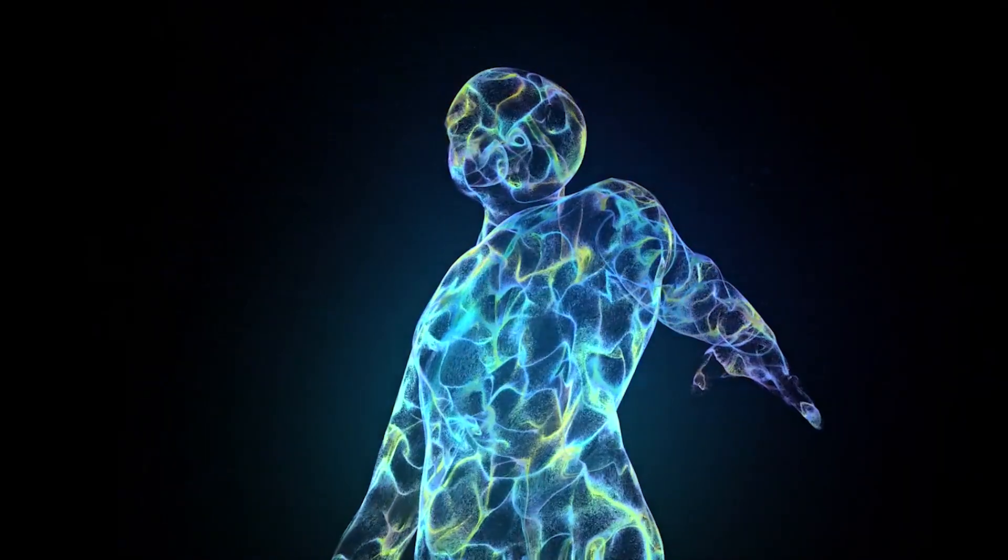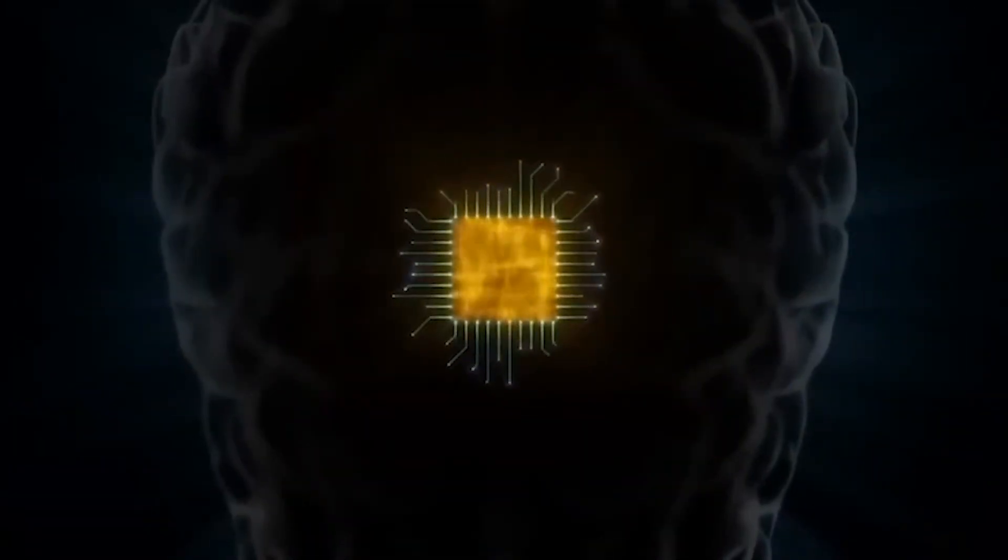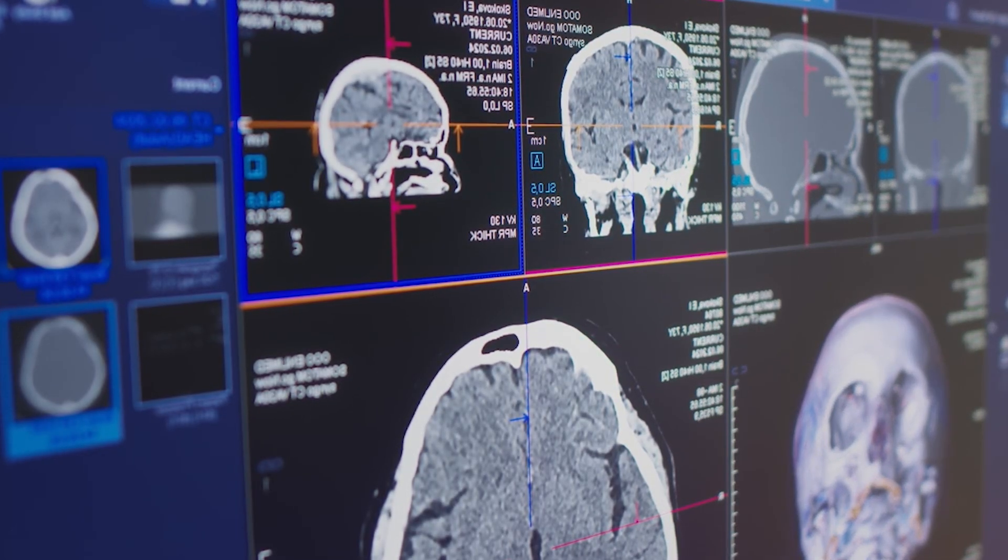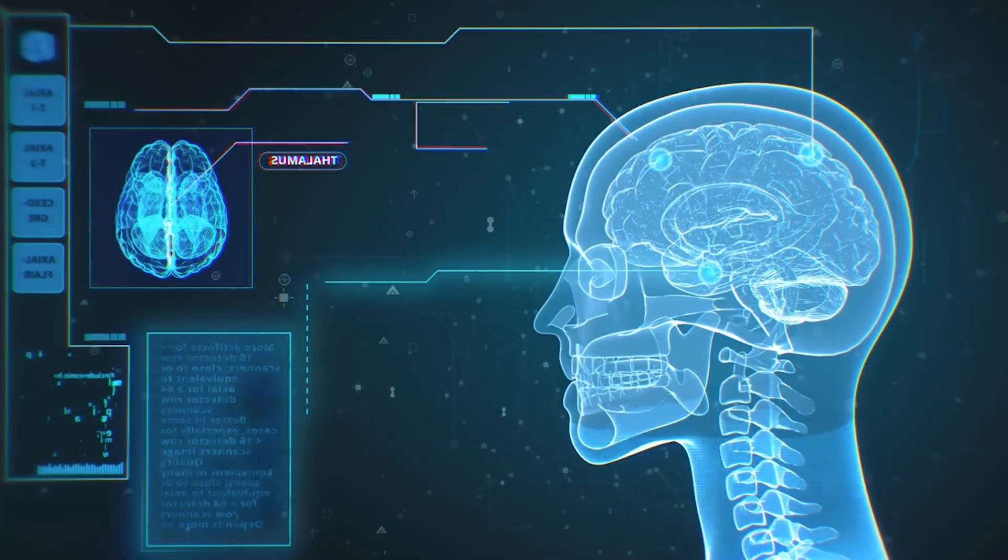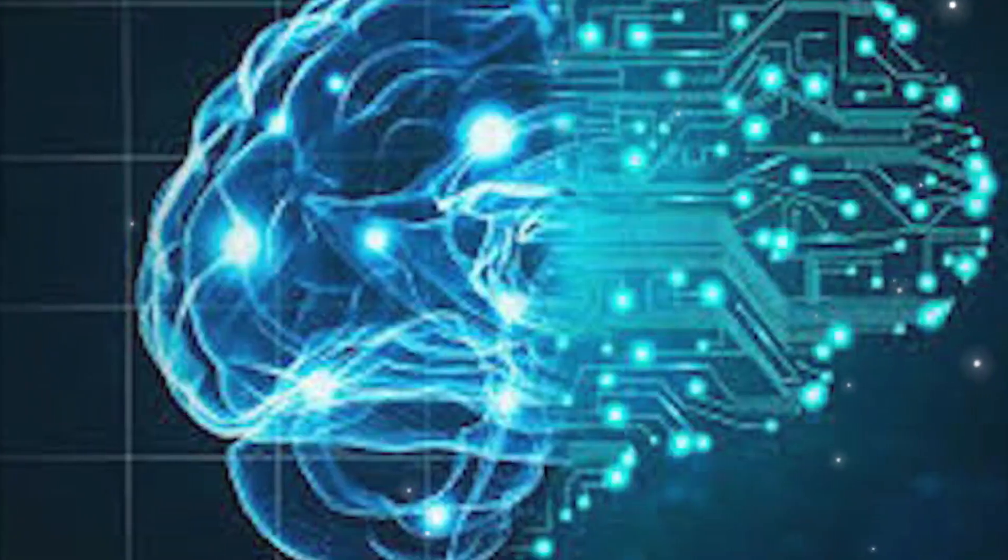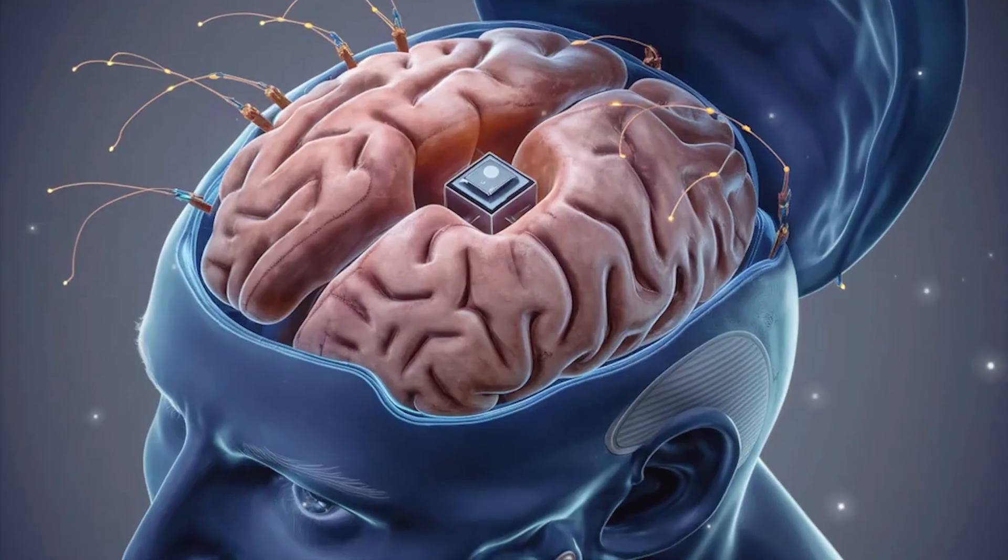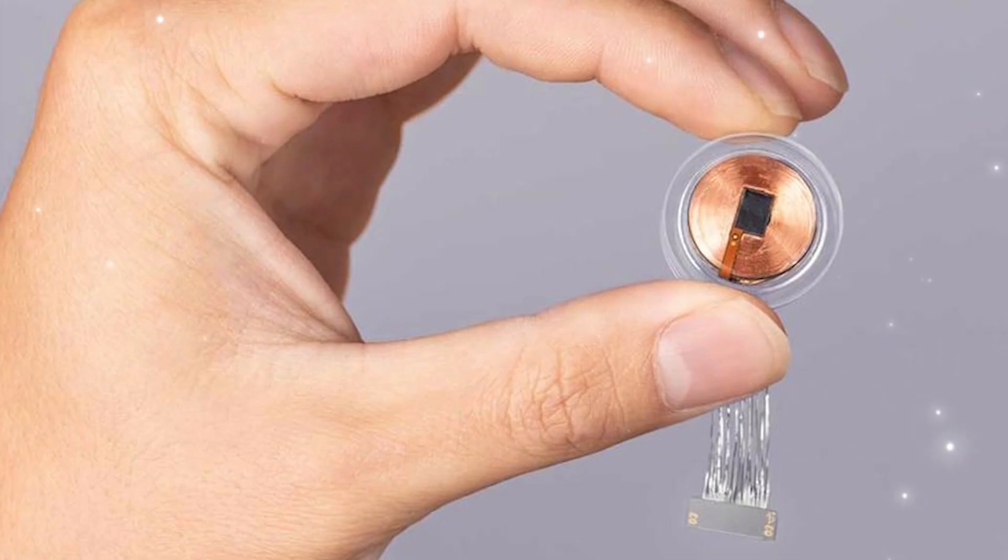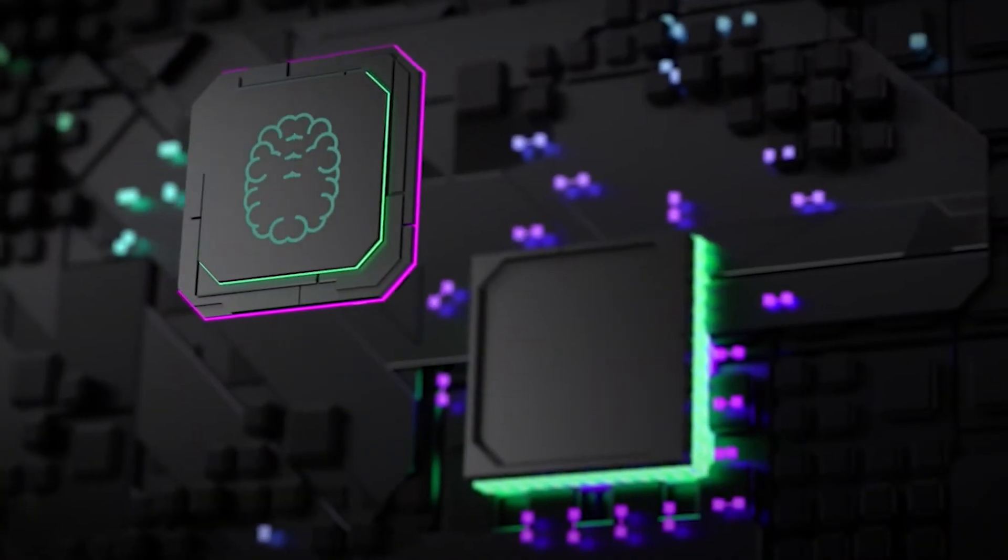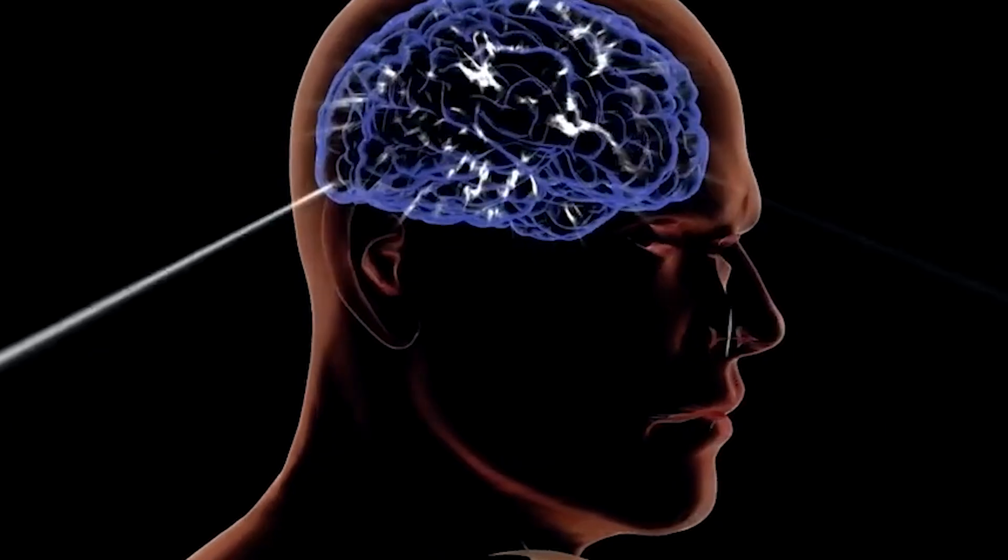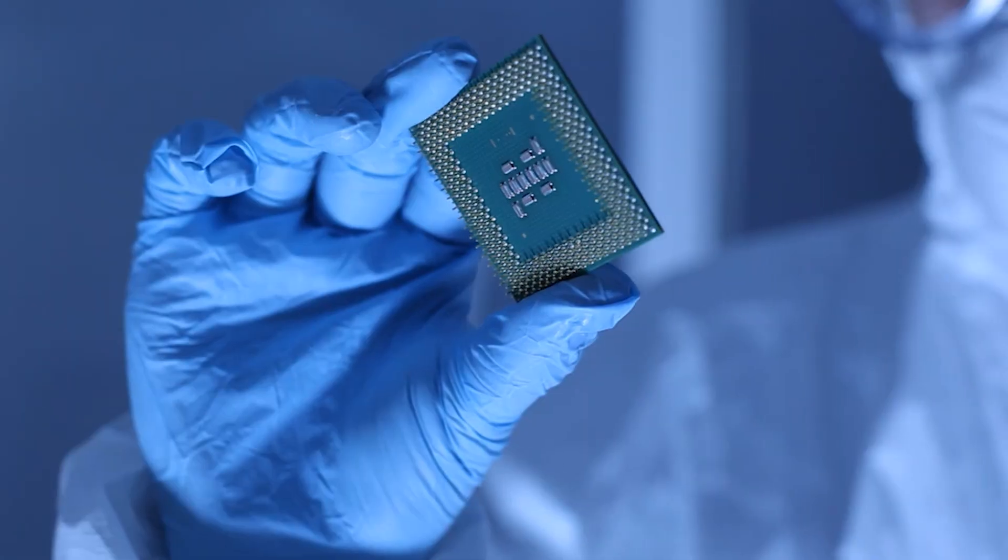For Elon Musk, Neuralink is much more than just a medical device. It's a bold step toward the future of humanity. While the short-term goal is to help people with neurological disorders, restoring movement to paralyzed individuals, treating memory loss or curing depression, Musk's long-term vision goes far beyond healthcare. He believes that Neuralink could be humanity's best chance at surviving in a world dominated by artificial intelligence. Musk has repeatedly warned that AI could one day surpass human intelligence and become uncontrollable. His solution? Instead of competing with AI, humans must merge with it.